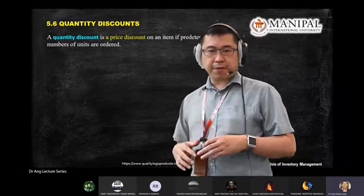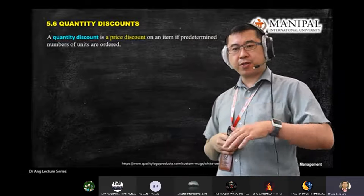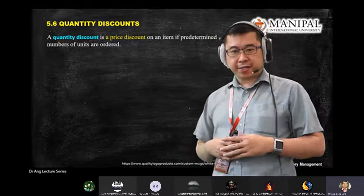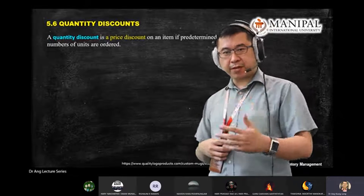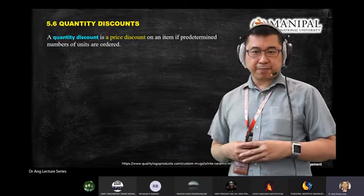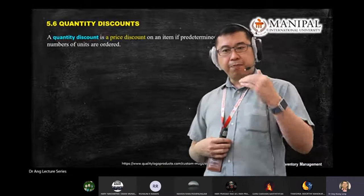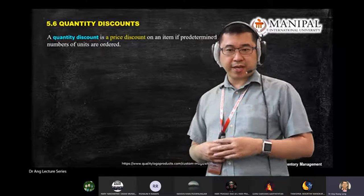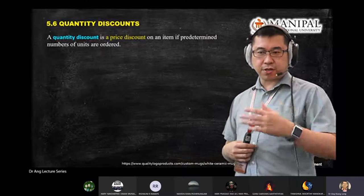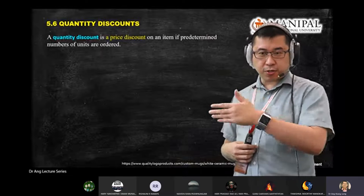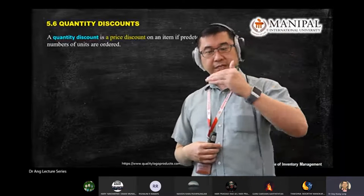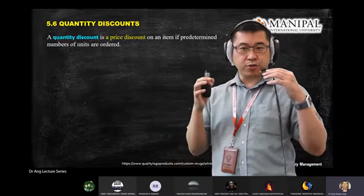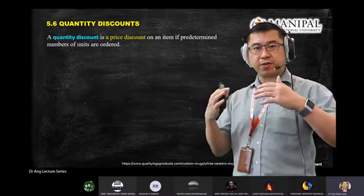For example, if you place an order of 1,000 units, it costs you the normal price — say, 10 ringgit per piece. But if you place 10,000 units, they may give you a 20% discount. And if you place further, you negotiate further. So you manage to save more cost as you increase your order size.